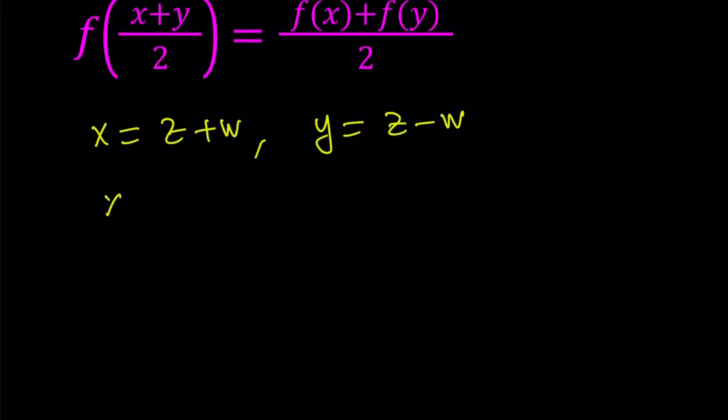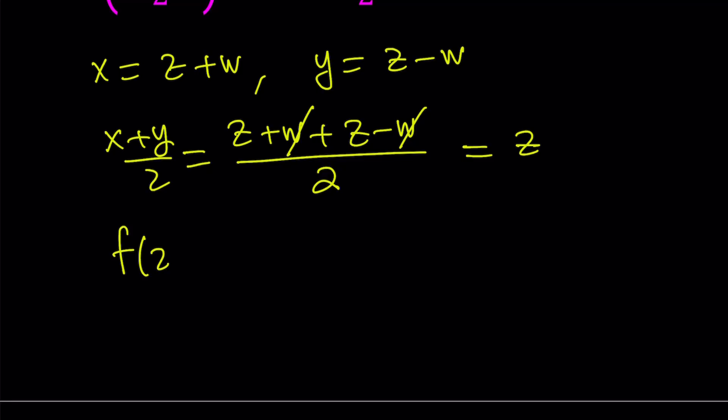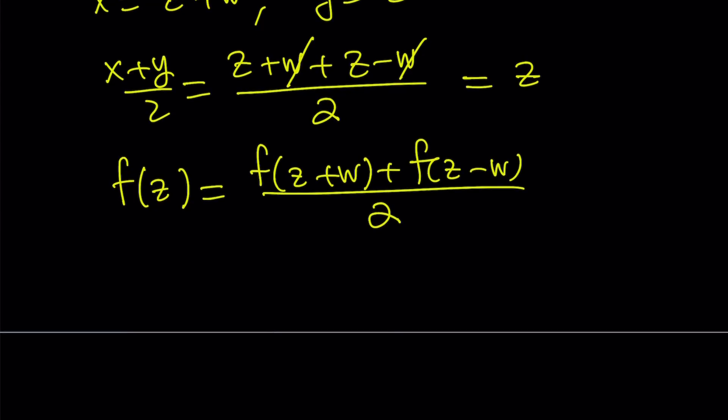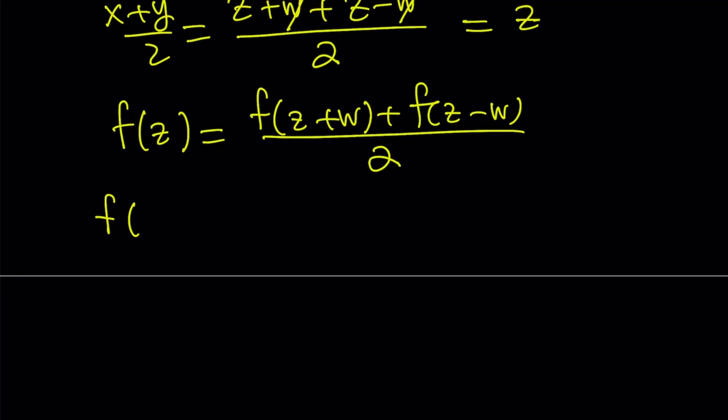From here, (x+y)/2 becomes (z+w + z-w)/2. The w cancels out and we end up with z. That means (x+y)/2 equals z, which is good. Now we get f(z), and on the right hand side we get (f(z+w) + f(z-w))/2. We can multiply both sides by 2, which gives us f(z+w) + f(z-w) = 2f(z). Great.